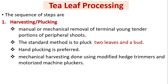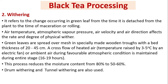Tea leaf processing — the sequence of steps begins with harvesting and plucking: the manual or mechanical removal of terminal and tender portions of peripheral shoots. The standard method is to pluck two leaves and a bud. Hand plucking is preferred; mechanical harvesting is done using modified hedge trimmers and motorized machine pluckers.